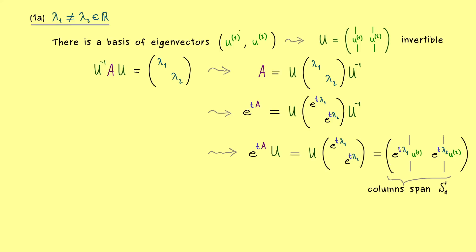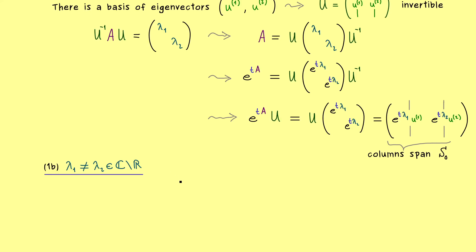The crucial part of Case 1A was that all eigenvalues and eigenvectors are real-valued, so no complex numbers are needed. This changes in Case 1B, where complex numbers are needed for the diagonalization. We could do the same calculation as before using complex numbers at each step, but that's not helpful for the solution, because we want real-valued solutions, not complex-valued ones. We still know that staying in the real numbers gives us a two-dimensional solution space — so how can we do that without the nice diagonalization?